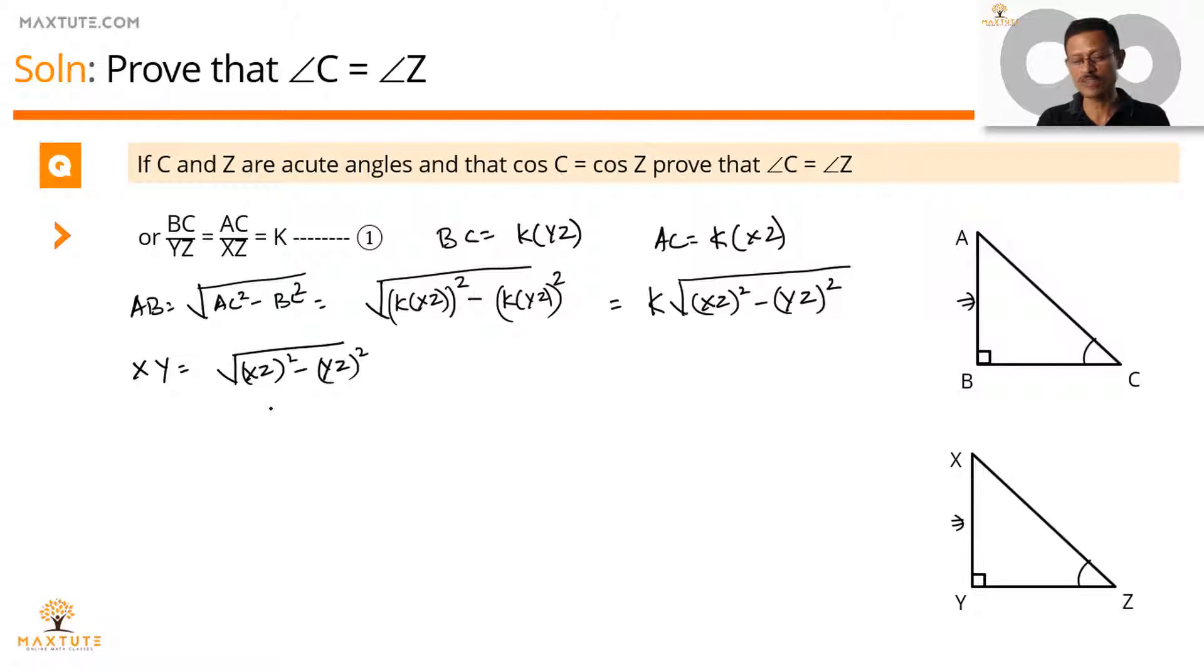Let's find out what is AB by XY. AB by XY, AB is equal to K into under root of XZ square minus YZ square. XY is nothing but XZ square minus YZ square under the root. So these two terms can cancel out. So we get AB by XY is equal to K.